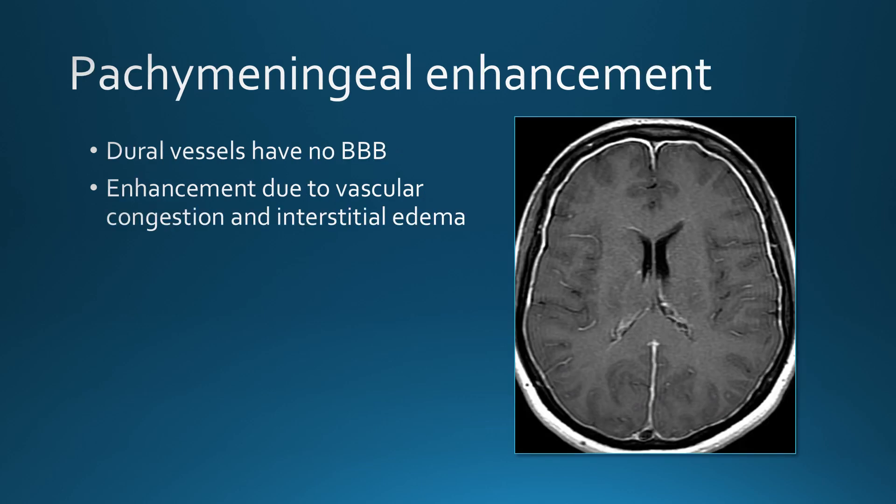In terms of pachymeningeal enhancement, the dural vessels have no blood-brain barrier. The only reason the dura doesn't normally enhance on MR is because it has a very low water content. The enhancement that we see in the dura is due to vascular congestion and interstitial edema.